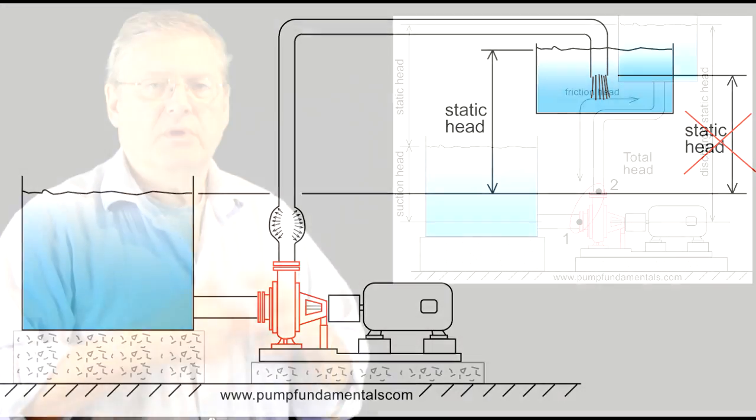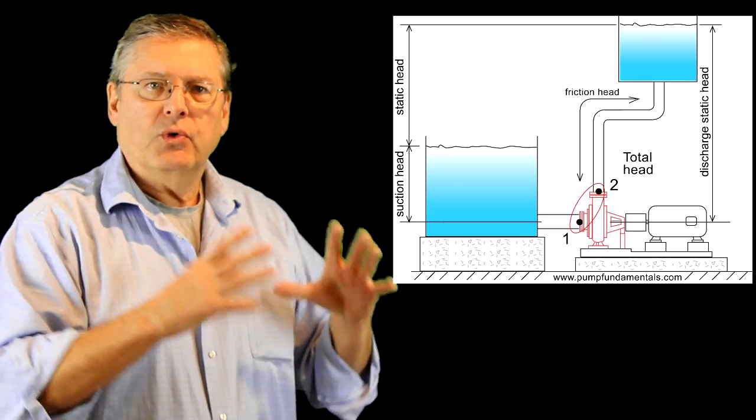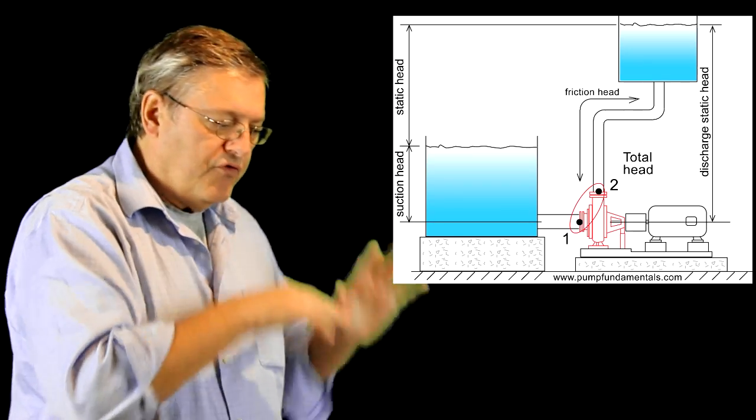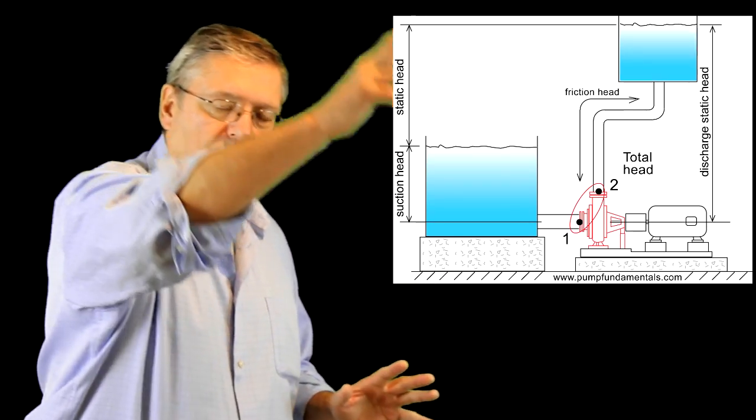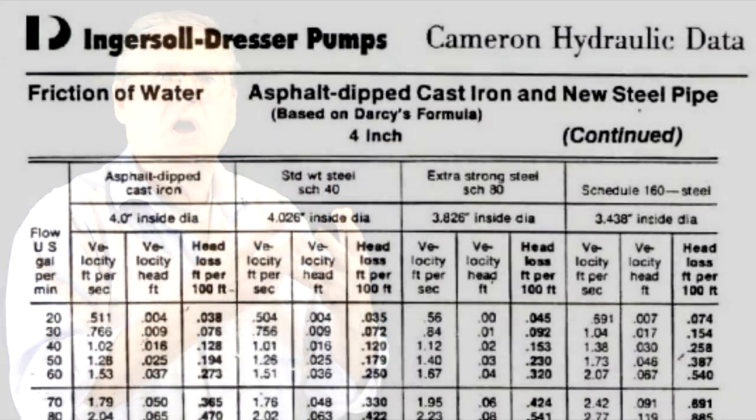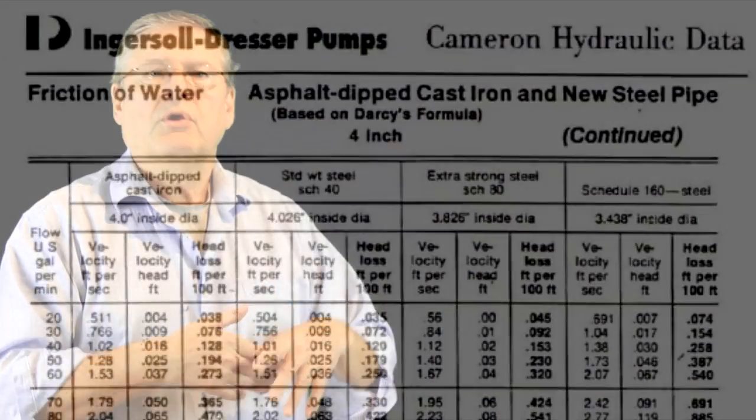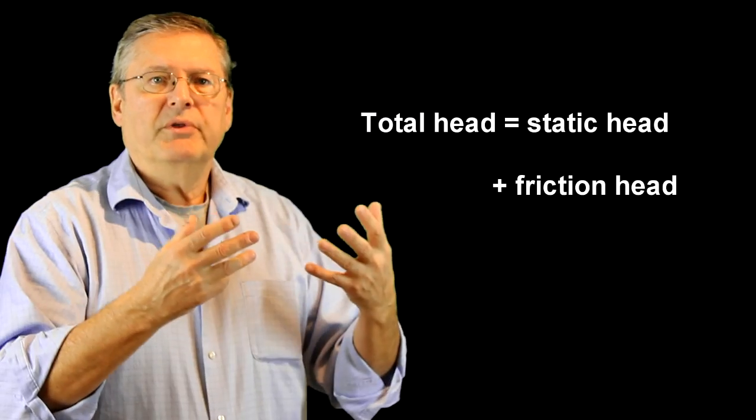One very important term is total head. Total head will be the sum of the total static head, so how far you have to pump from down below to up, and friction head. Friction head is the amount of friction loss there is for a fluid going through a pipe, so it will depend on the velocity, the pipe size, the type of fluid, if it's viscous or not. You can find the value of friction head based on those factors in various ways. There are tables and formulas to calculate it.